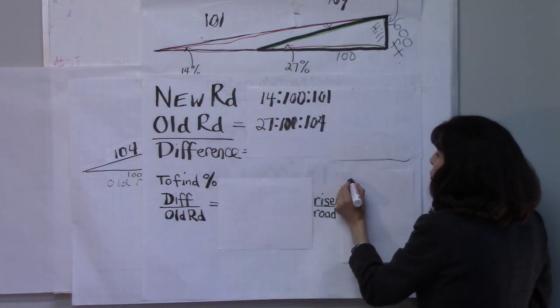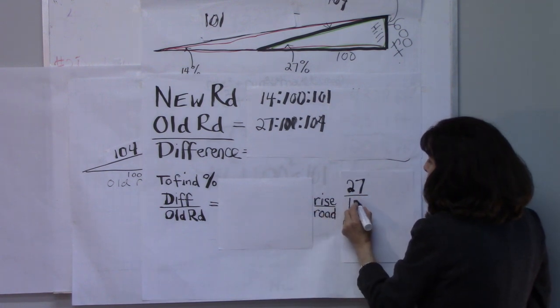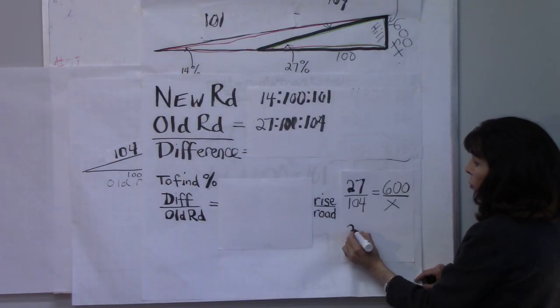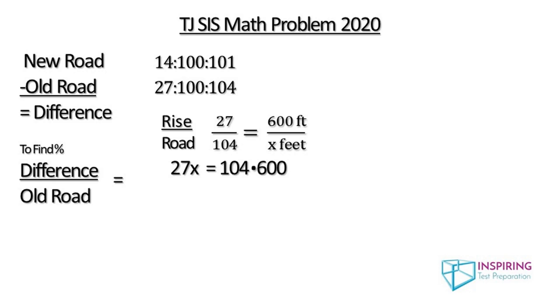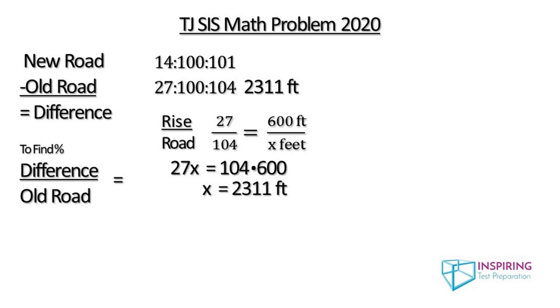Well, we take the 27, which is the rise and we relate it to the road, which is 104. And we set that equal to 600 over x, where x is the road length. So then we cross multiply, get 27x equals 104 times 600. And then x will equal 2311 feet for the length of the old road. That's 2311 for the old road.